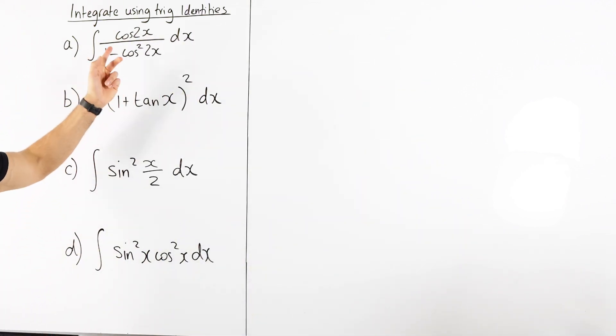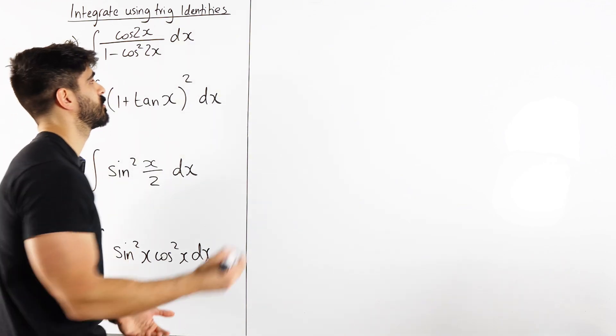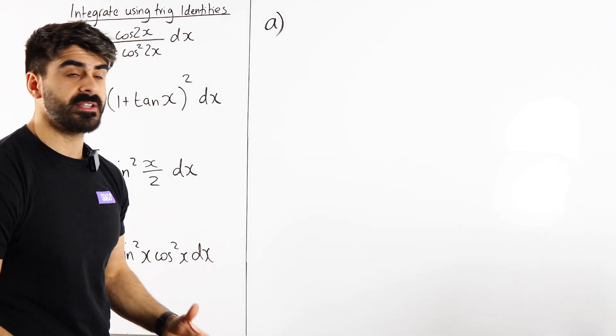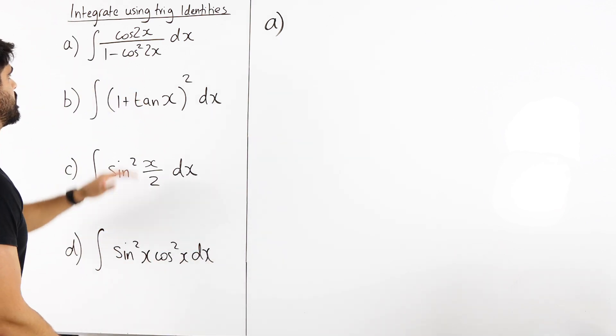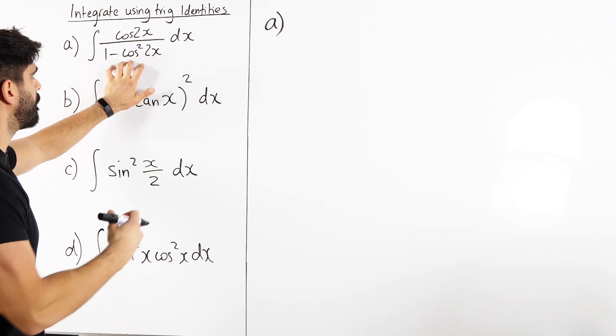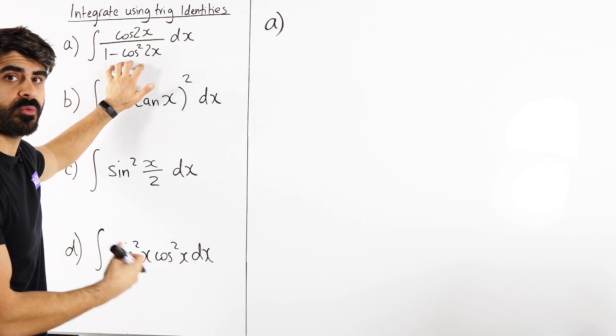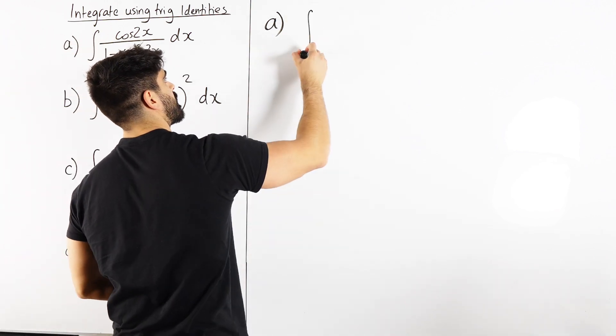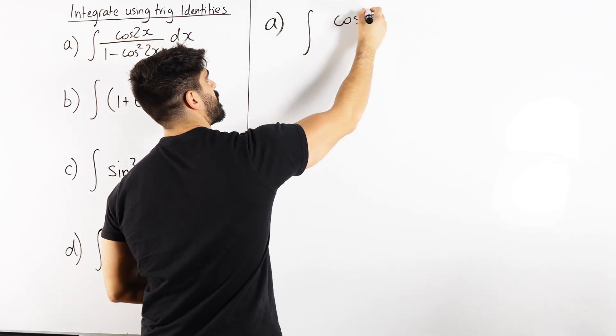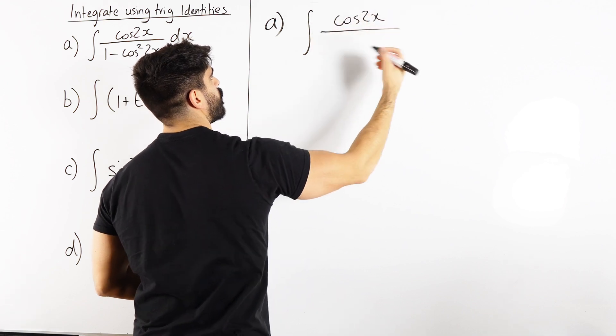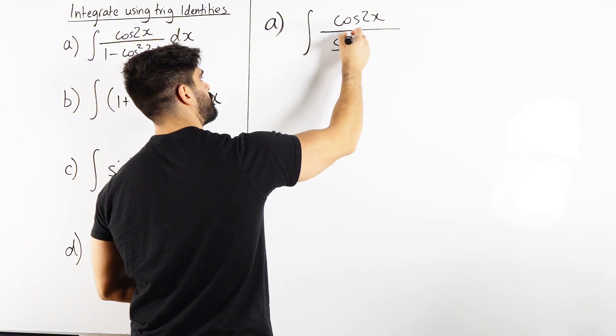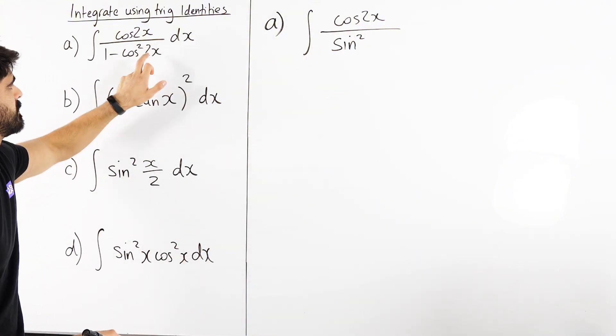Part A is saying to integrate cos 2x all over 1 minus cos squared 2x. With most of the questions of integration, you can just do basic manipulation. Now, the denominator, 1 minus cos squared. I know 1 minus cos squared is sine squared. So this is going to become the integral of cos 2x over sine squared 2x. But you have to remember to keep the angle the same.